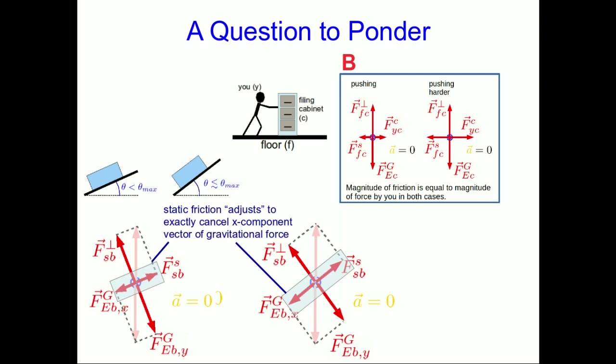so the static friction also has to increase. It increases just to the point that the acceleration is zero, and so it always matches that downslope component of the gravitational force.